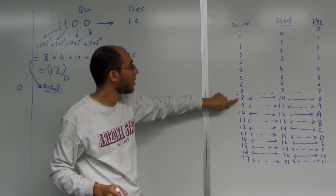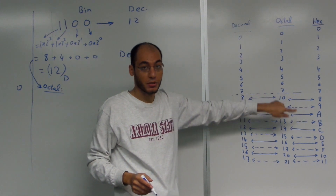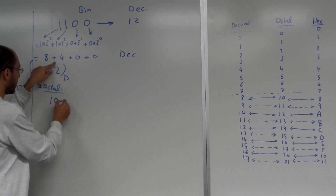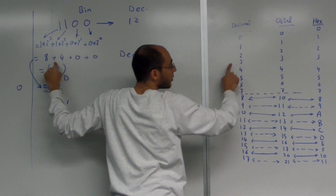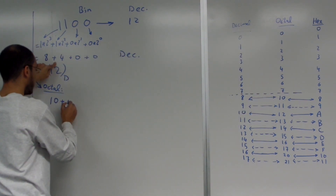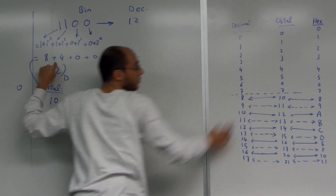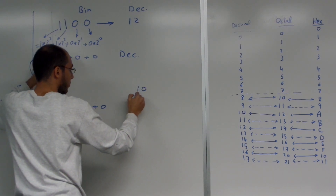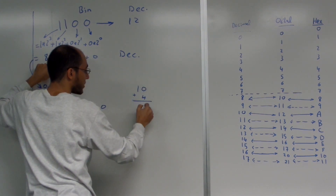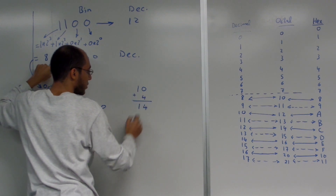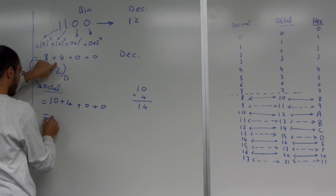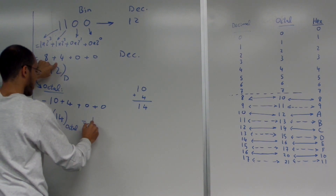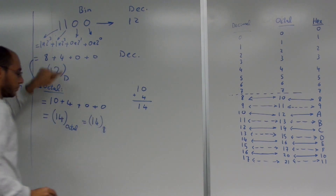So what is eight in octal? Eight in octal is written as one zero. So I write here one zero, plus four. How shall we write four in octal? Four is written as four, plus zero, because zero is written as zero. So if you do the math, one zero plus four: four plus zero is four, and one plus zero is one. So the final answer is fourteen in octal.